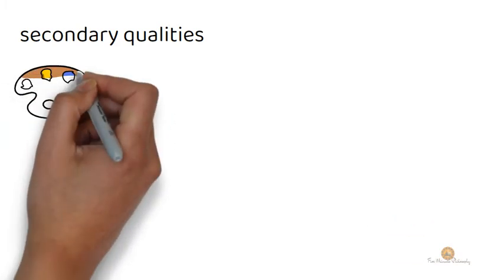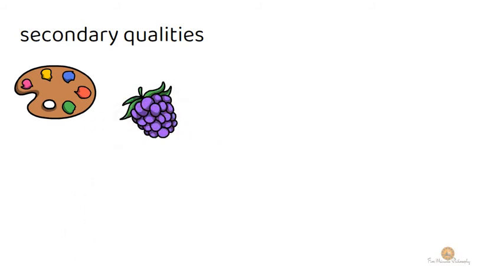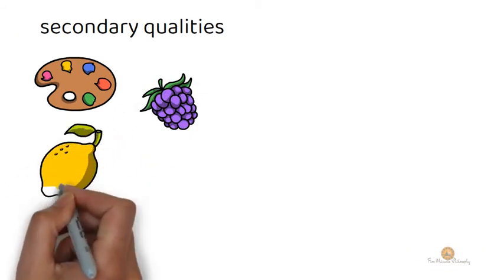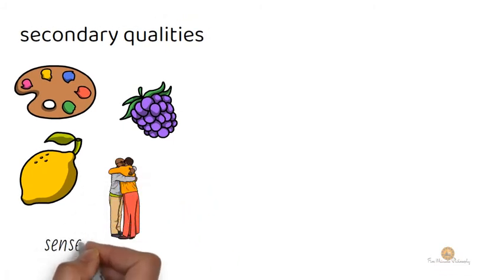To understand this, we have to get clear on secondary qualities and primary qualities. Secondary qualities are things like color, taste, smell, touch, really anything that's associated with the senses.